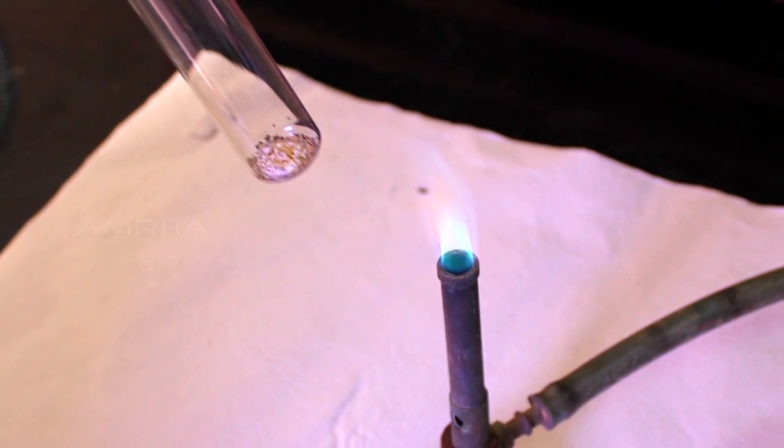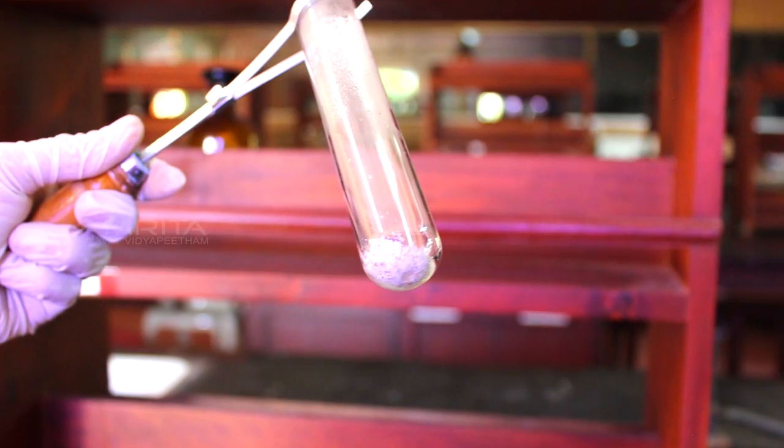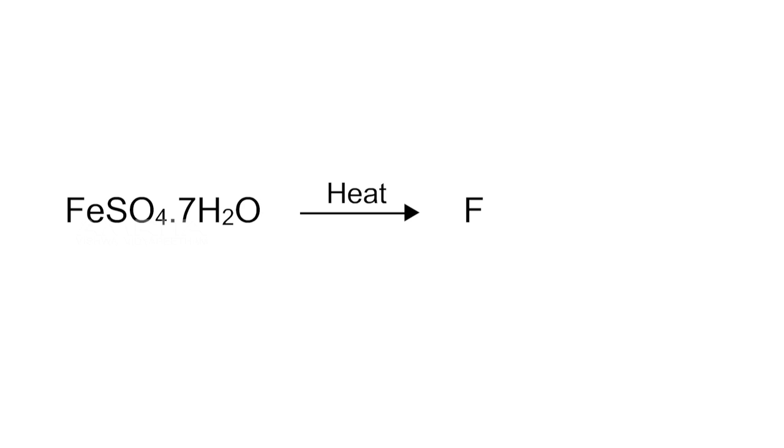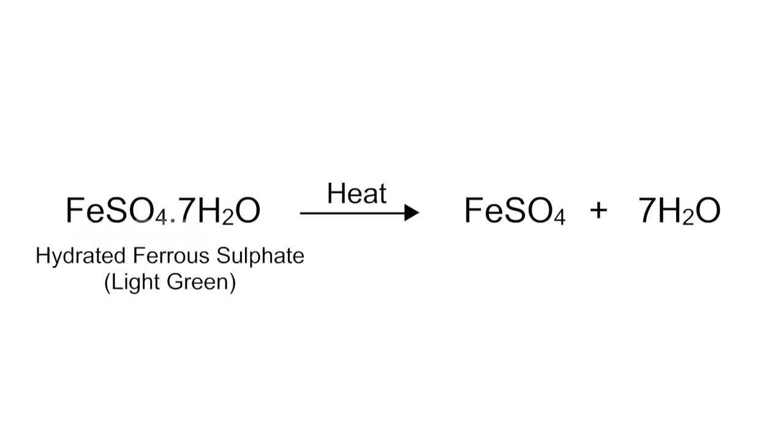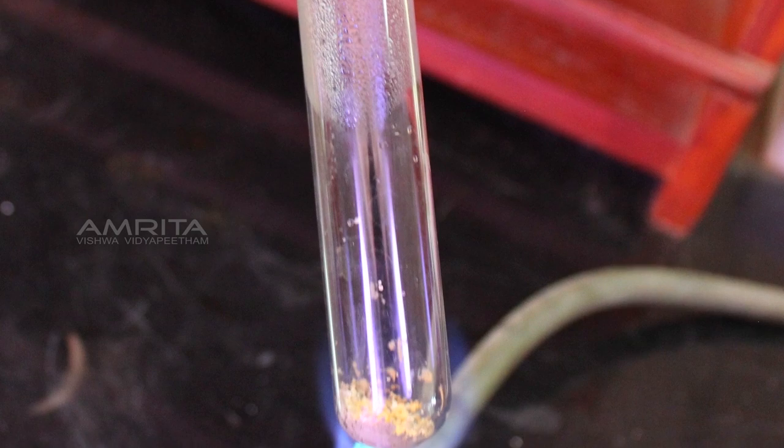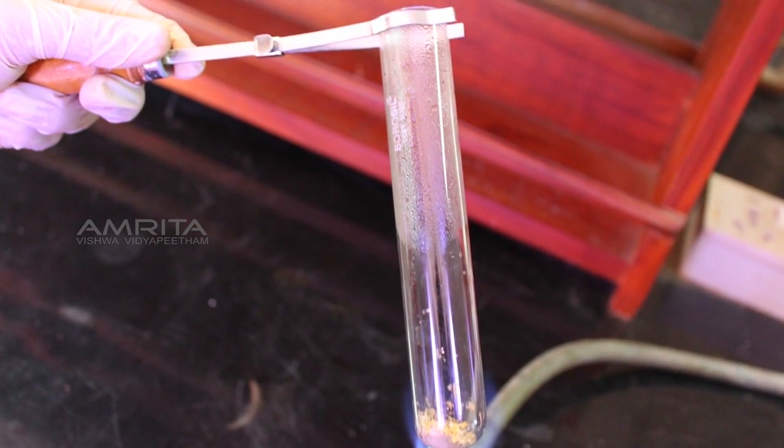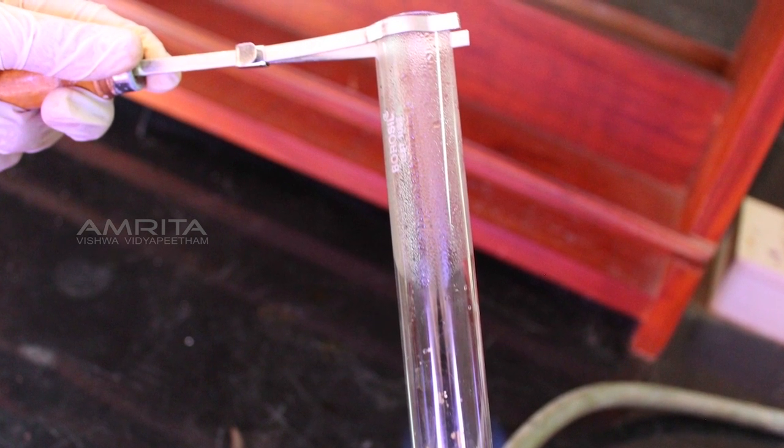On heating, the colour of the crystals change from light green to white. This is due to the formation of anhydrous ferrous sulphate that is produced on heating hydrated ferrous sulphate crystals. Anhydrous ferrous sulphate is formed due to the loss of water molecules on heating.